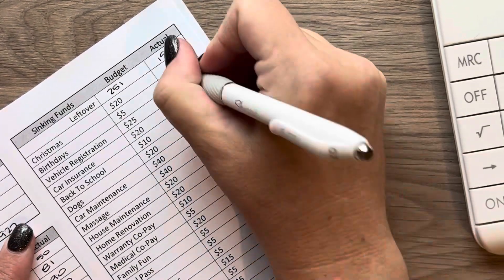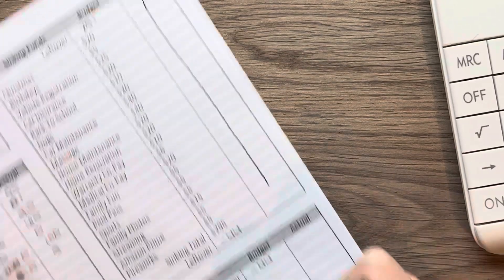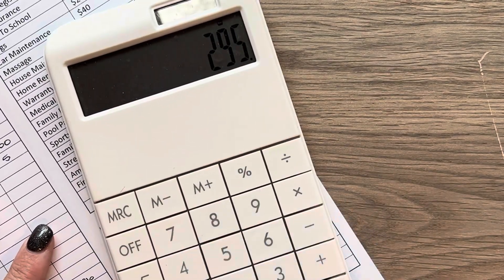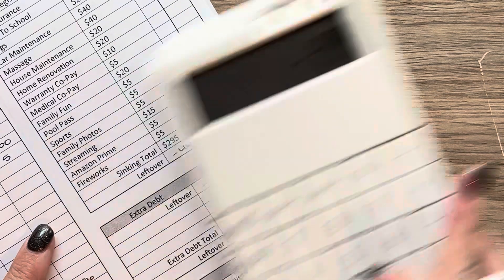These were all correct for $295. So I'll subtract $295, which leaves us with a negative balance of $144.